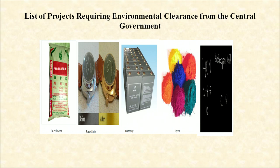Few other industries include tarred roads in the Himalayas and forest areas, distilleries, raw skin and hide, pulp, paper and newsprint, dyes, cement, foundries, electroplating and meta-aminophenol. EIA appraises the environmental health and social implications of planned developmental processes. It links environment with development. The goal of EIA is to ensure environmentally safe and sustainable development.